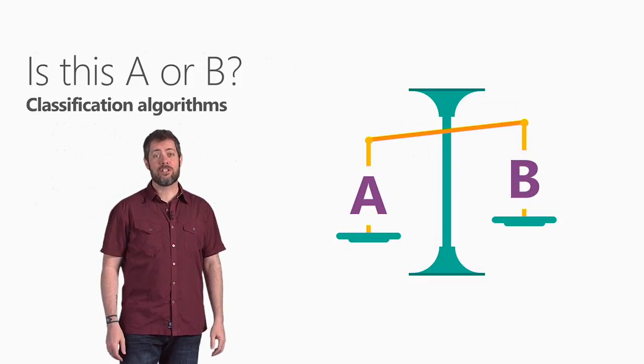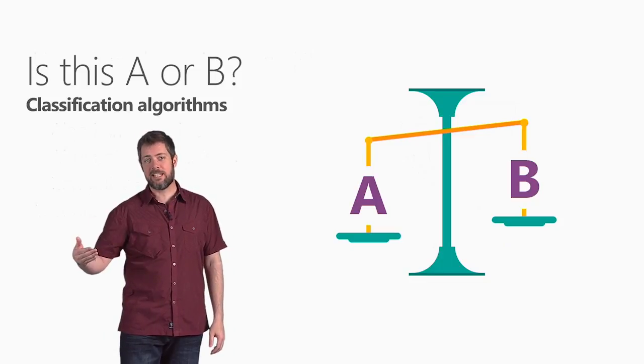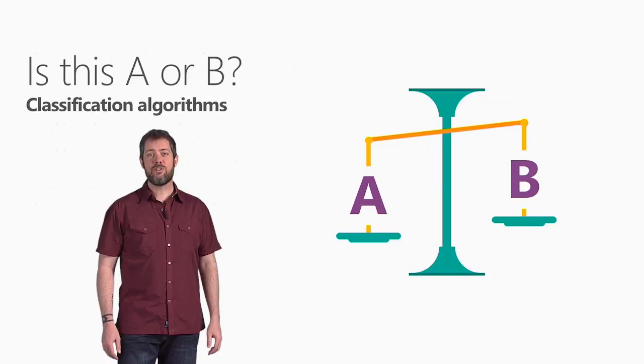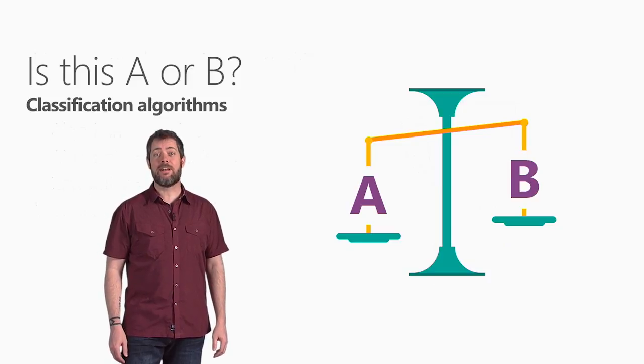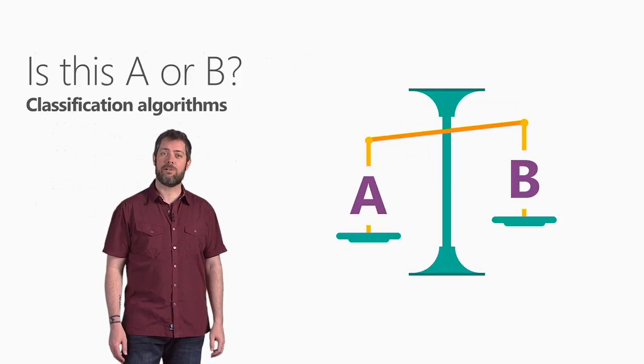This question can also be rephrased to include more than two options. Is this A or B or C or D? And this is called multi-class classification. It's useful when you have several or even several thousand possible answers. Multi-class classification will go through and choose the most likely one.